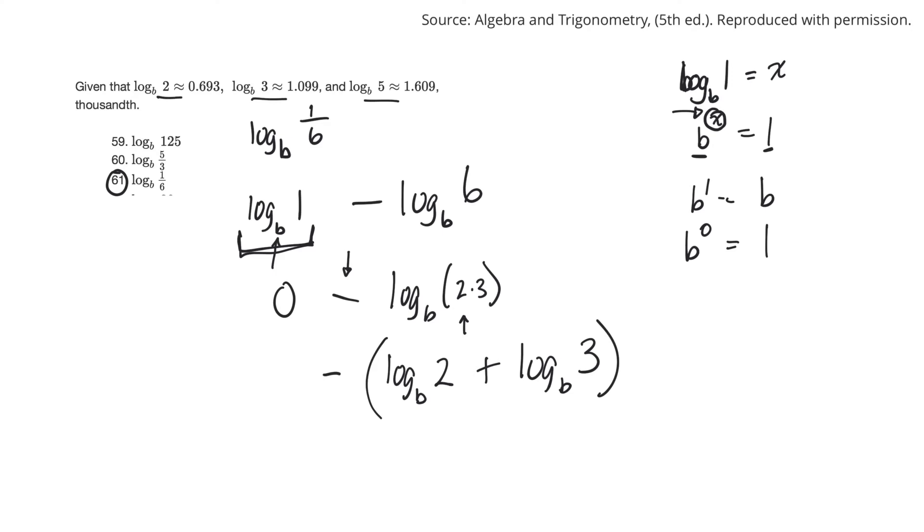So you can go log base b of 2. That's 0.693 plus log base b of 3. That's 1.099. I guess I have a 0 there too, but 0 minus anything is just going to be negative. So then you'll have 0 minus 1.792. And so your answer will be negative 1.792.